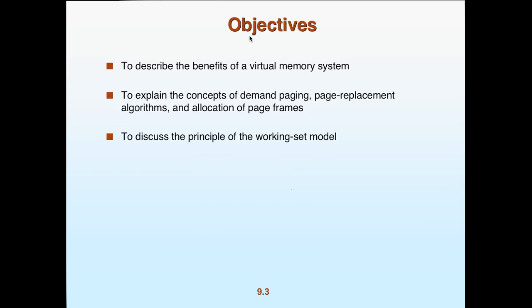We looked at the concept of the page fault, where the CPU goes to the page table and finds out whether or not the page is actually loaded. If it is, leave it alone and use it; if not, it triggers a page fault — nothing more than a command that goes back to the kernel saying try that again because it's not loaded, so it goes back and loads the missing page. We'll continue the concept, look at page replacement, frames, and the working set model.